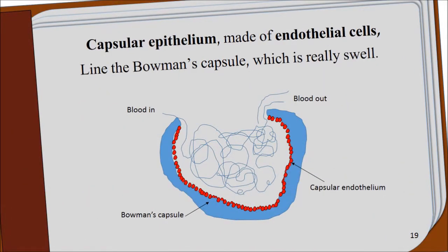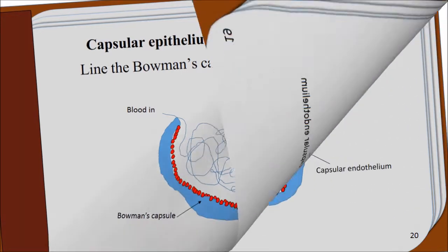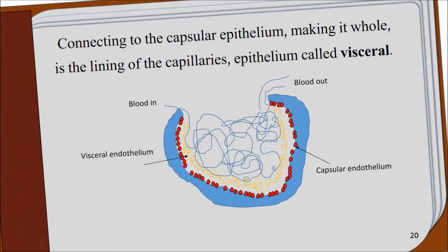Capsular epithelium, made of endothelial cells, line the Bowman's capsule, which is really swell. Connecting to the capsular epithelium, making it whole, is the lining of the capillaries, epithelium called visceral.